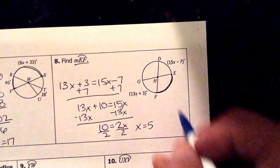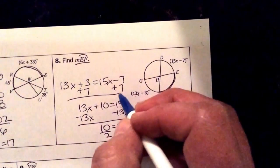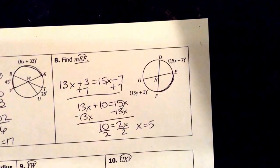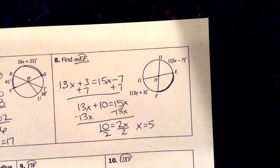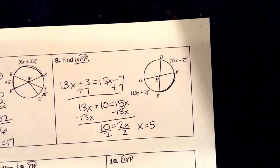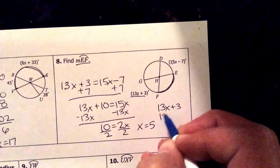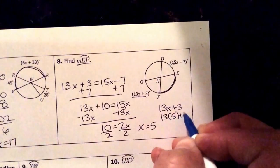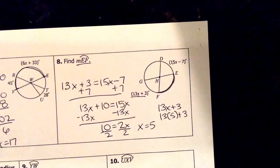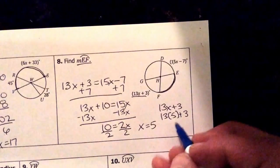What I need to do next is plug it into one of these equations right here to see what one of the arcs is. I'm going to choose to do this one, 13x plus 3. So 13 times 5 plus 3. That's going to be 68.